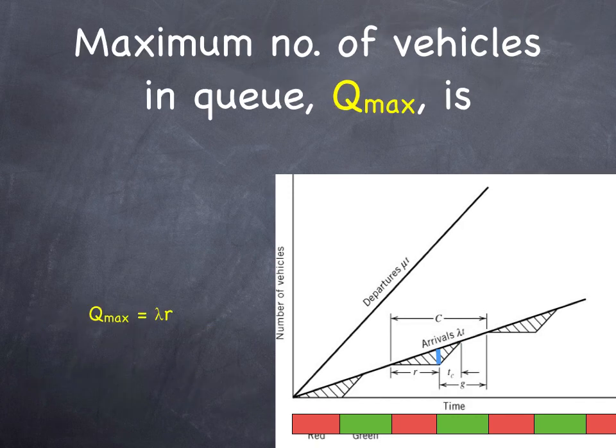The maximum number of vehicles in the queue occurs when the red light is about to turn green, assuming the queue fully discharges. So if you think about it, that's the point at which the maximum number of vehicles is accumulated before any of them have been able to discharge. That's lambda, or the arrival rate, times the red time. Vehicles per second times the number of seconds gives you the number of vehicles.